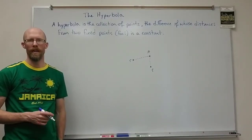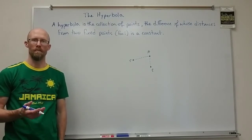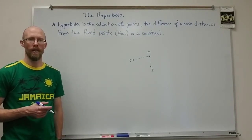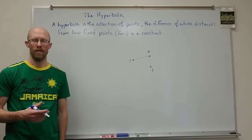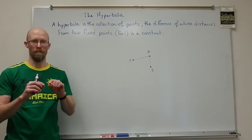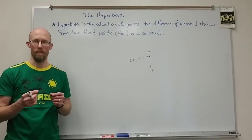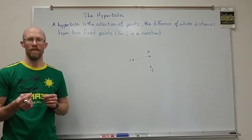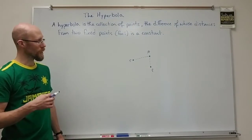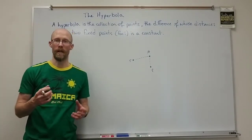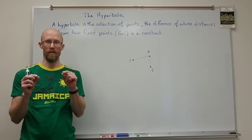Now we're going to move into the fourth and final conic section called the hyperbola. We've already seen circles, parabolas, and ellipses, and their definitions all revolve around this idea of a distance. A circle is all points whose distance from a fixed center is the same. A parabola is all the points whose distance from a fixed point and line are the same. An ellipse is the collection of all points where the sum of the distances to two fixed points is the same.